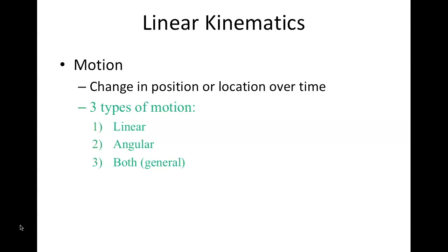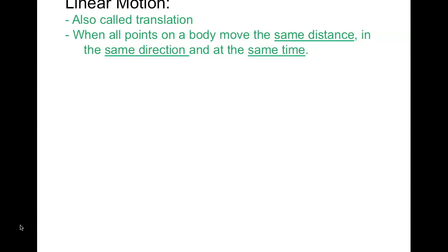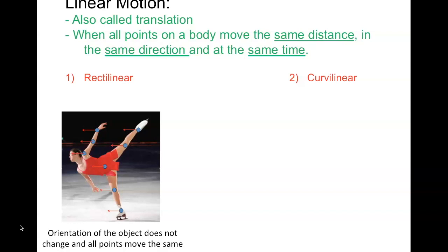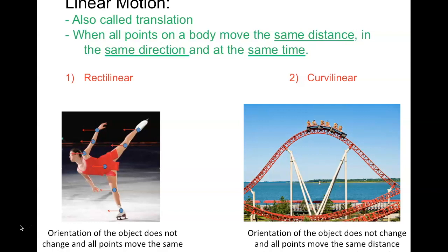With linear motion, it's similar to taking a piece of paper and sliding it across a table — all points of the body move the same distance in the same direction at the same time. That's a uniform translation. Rectilinear motion looks like a skater moving in a straight line, while curvilinear means all points move the same distance but not in a straight line. There's no twisting or turning; everything is just sliding.